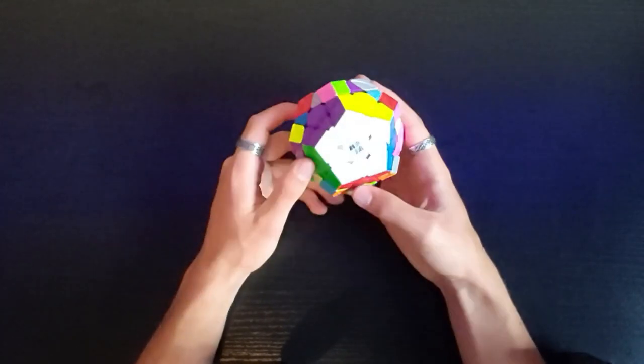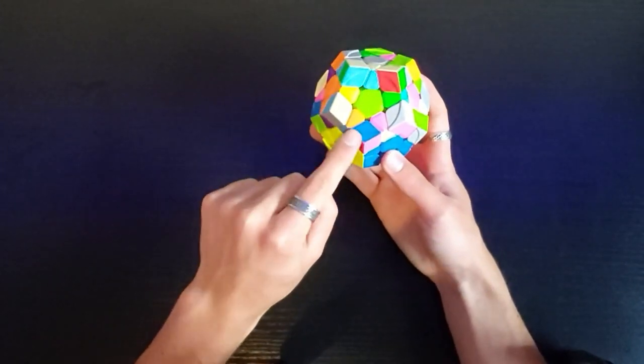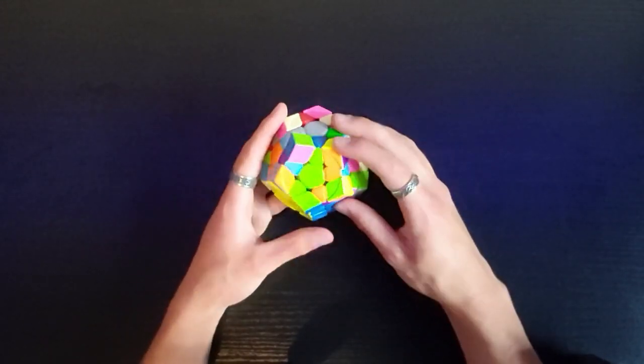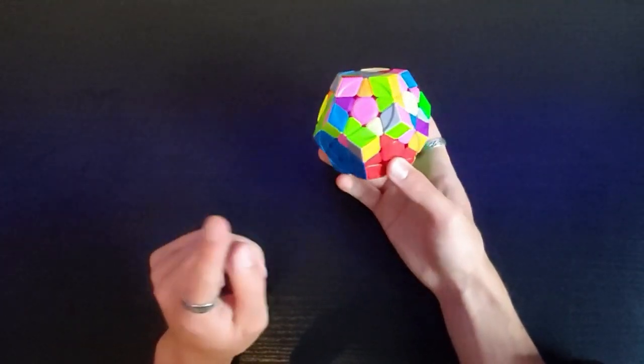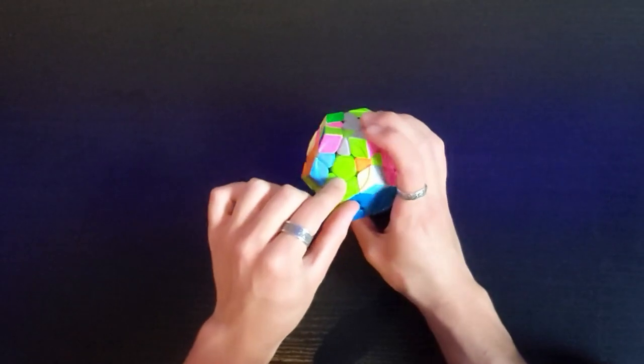And just like that. We've now solved this entire section. Now I believe I have to solve these three pieces here. And I can do that just like that. Now let's do the same thing to all the other sides. And there we go. We've got all these little pieces around here.